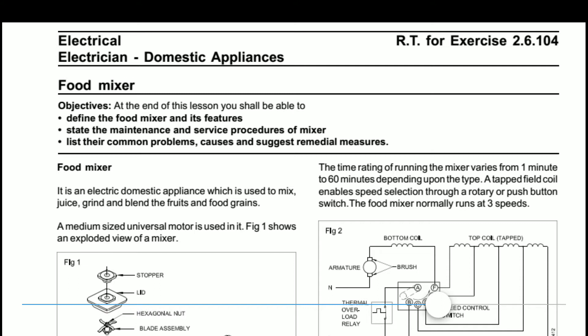Now we have a chapter of domestic appliances. We have to cover the last class topics including air conditioner, water heater, and freezer. We also have to cover the food mixer.